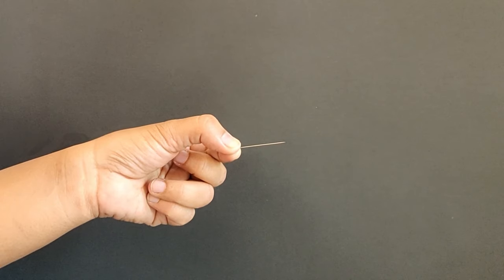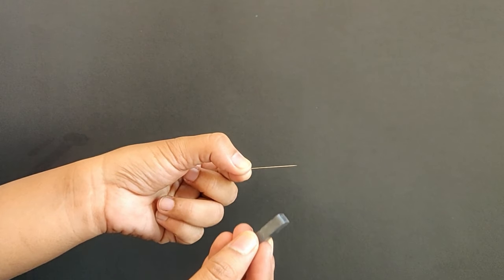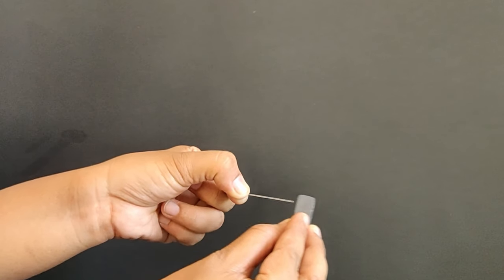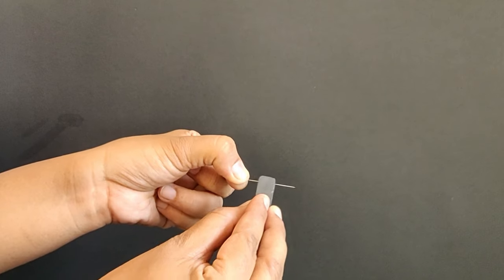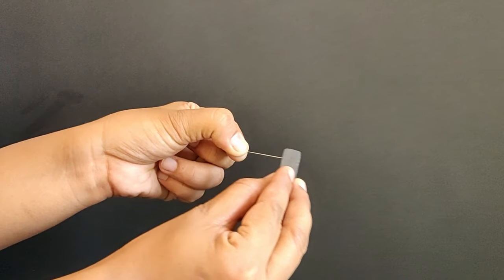The first step in this experiment is to magnetize the needle. For this, rub the bar magnet along the length of the needle. Starting from the right, move to left and lift the magnet and start again at the right.